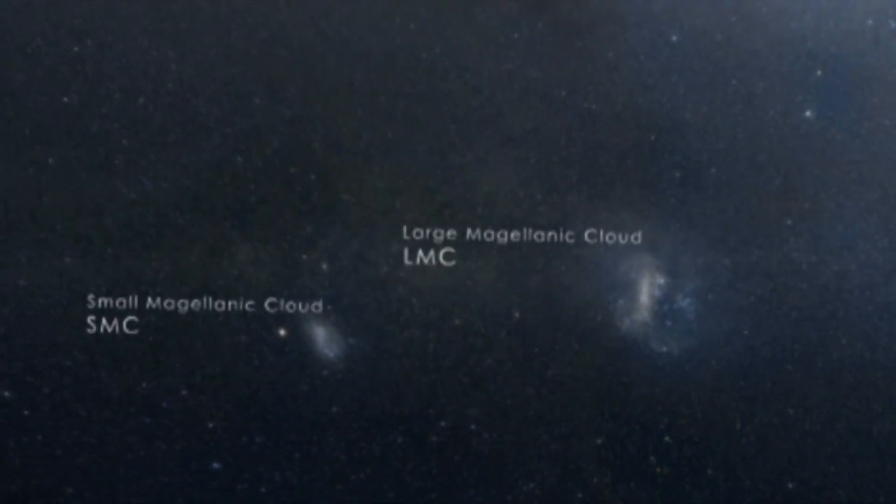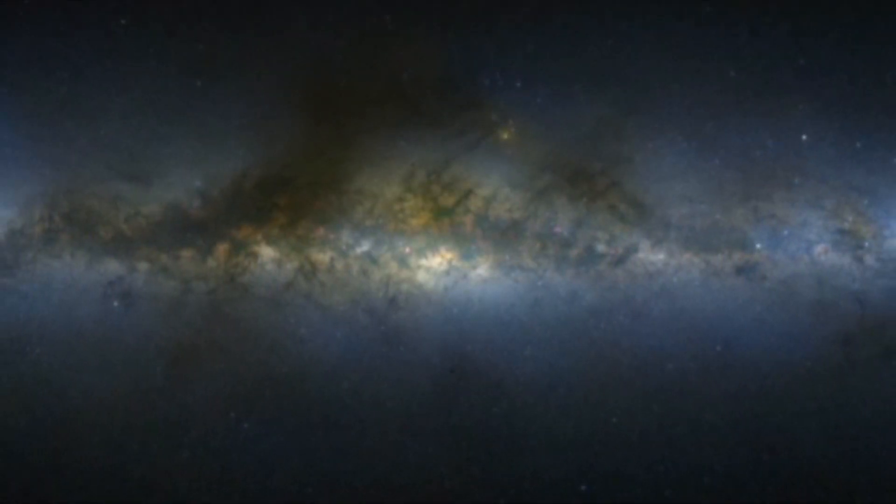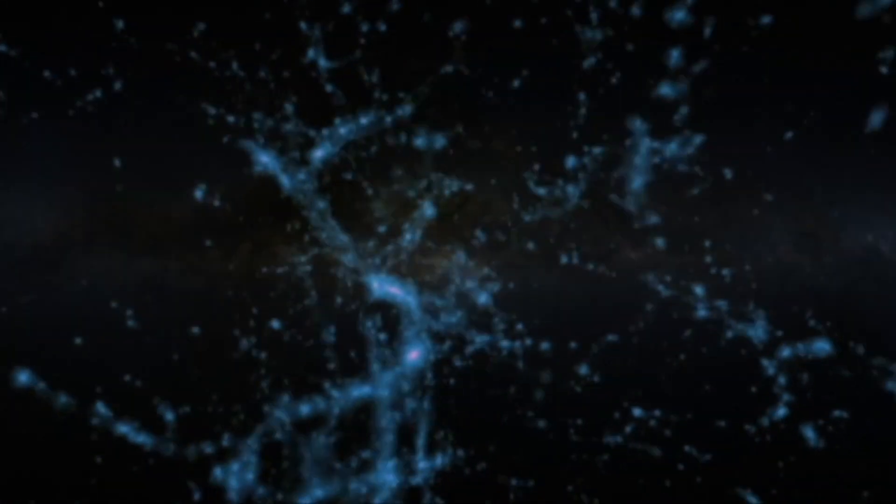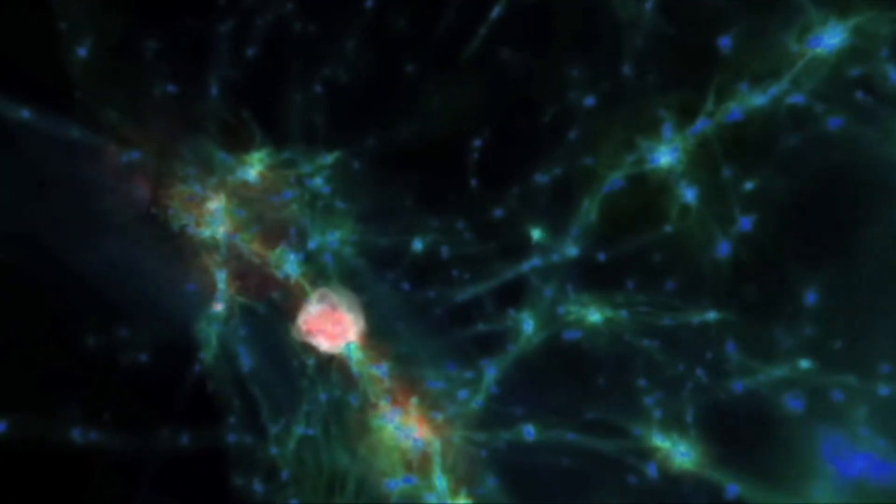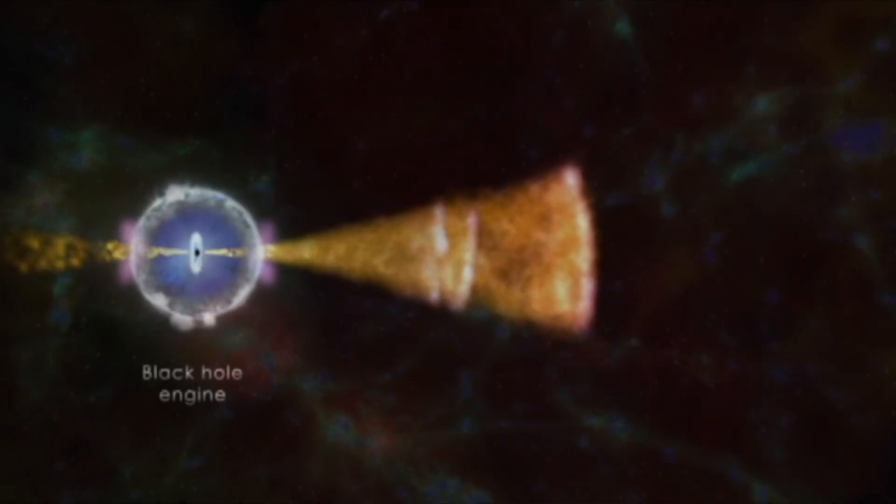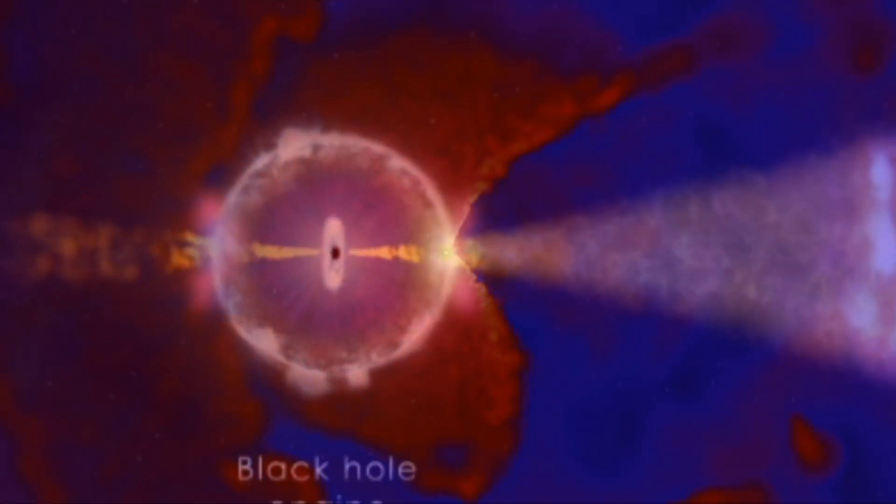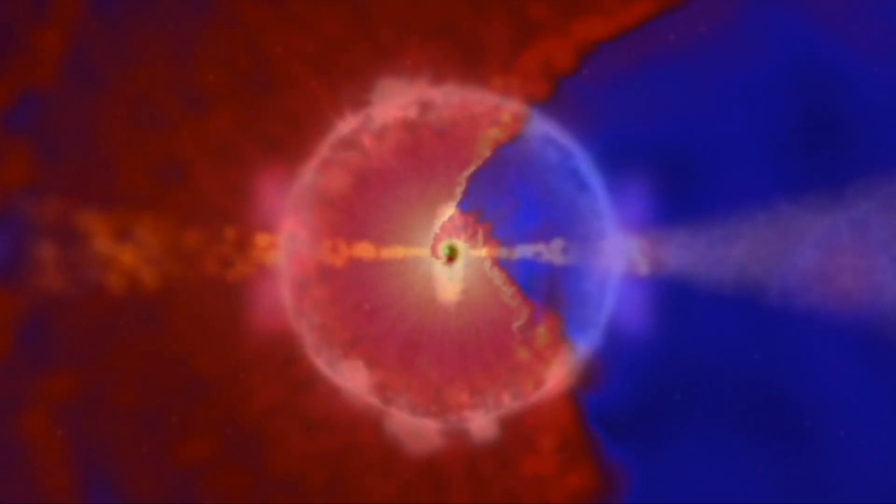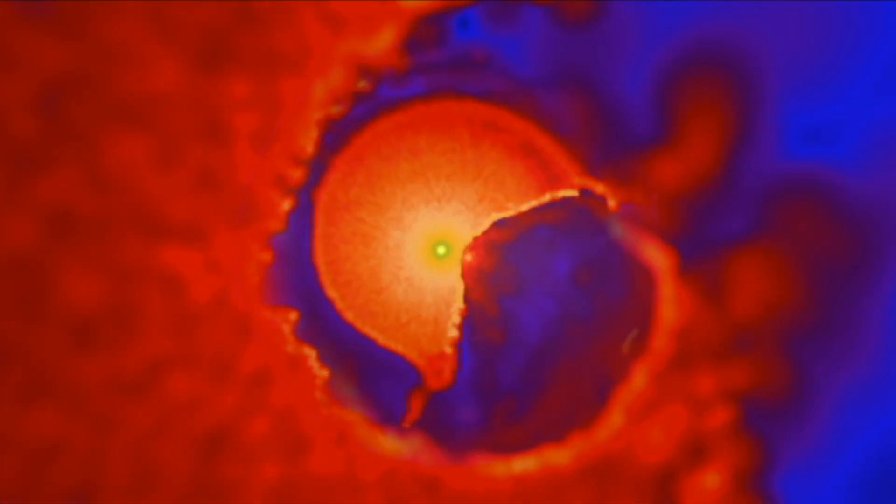Astronomers do not really know how galaxies are formed, what controls their shapes, what makes them form stars, or how the chemical elements are generated and redistributed through the galaxies. Nor whether the central black holes exert any great influence over the galaxies.